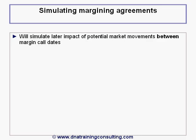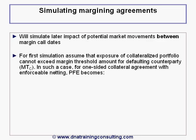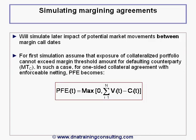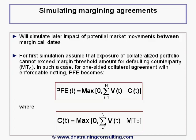We will simulate, later in this module, the impact of potential market movements between margin call dates, but for our first simulation we assume that the exposure of a collateralized portfolio cannot exceed the margin threshold amount for the defaulting counterparty. In such a case, for a one-sided collateral agreement with fully enforceable netting, PFE becomes this expression here, where C(t) is this expression here.